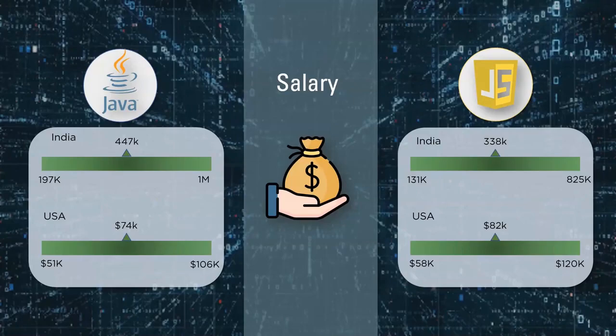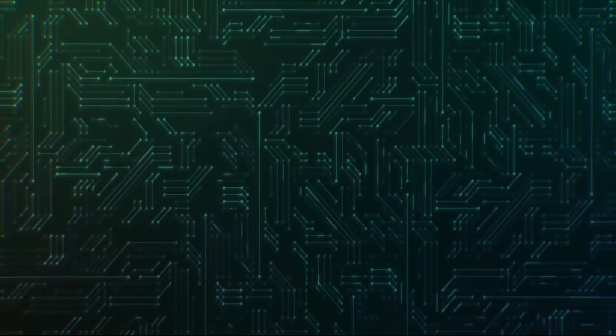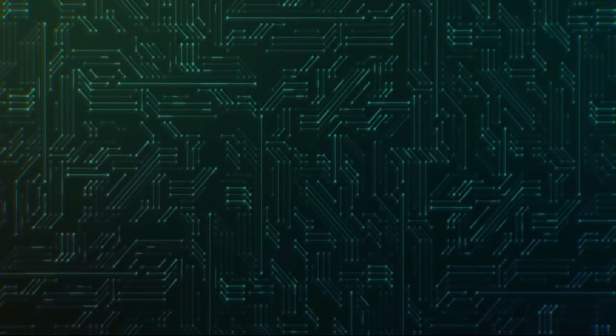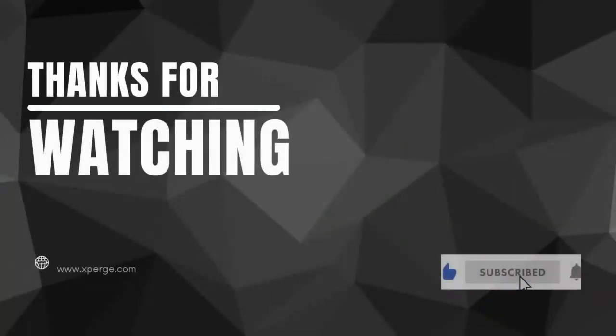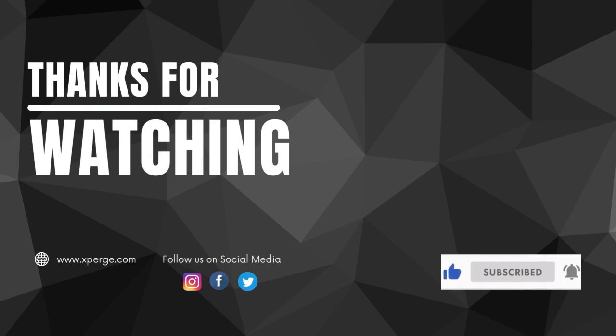In the case of JavaScript, the average salary of a JavaScript developer in India is around 3,38,000 rupees per annum, and in the U.S. it is around $82,000 per annum. I hope you are clear with the differences between Java and JavaScript. If you liked the video, press the like button, share it with your friends, comment your suggestions below, subscribe to our channel and hit the bell icon. Thanks for watching.